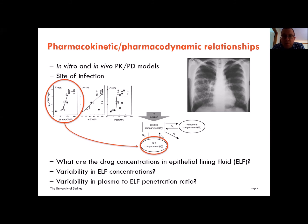It becomes more difficult because we have to look at the location of the infection. In in vitro systems we deal with one compartment, and more advanced models deal with intracellular environments. Within a patient, for example with a pulmonary infection, we talk about effective antimicrobial concentrations in the epithelial lining fluid. We have to translate plasma concentrations into epithelial lining fluid concentrations. For TDM, sampling of ELF is not easy — in some situations we may use bronchoalveolar lavage to get some estimation of concentration at the site of infection, but this is generally not available.